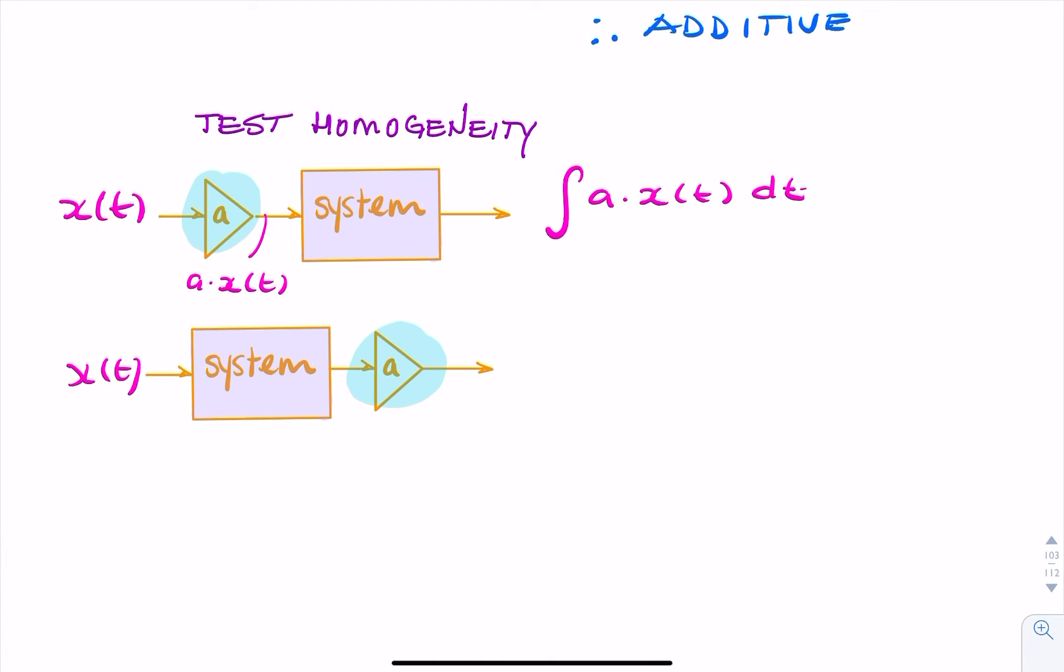So here, if the input was x of t, the output to the system here would simply be the integral of x of t dt. And if you multiply that by a constant a, you'll have a times the integral of x of t dt.